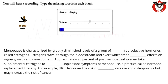Menopause is characterized by greatly diminished levels of a group of steroid reproductive hormones called estrogens. Estrogens travel through the bloodstream and exert widespread physiological effects on organ growth and development. Approximately 25% of postmenopausal women take supplemental estrogens to alleviate unpleasant symptoms of menopause, a practice called hormone replacement therapy. For example, HRT decreases the risk of cardiovascular disease and osteoporosis but may increase the risk of cancer.